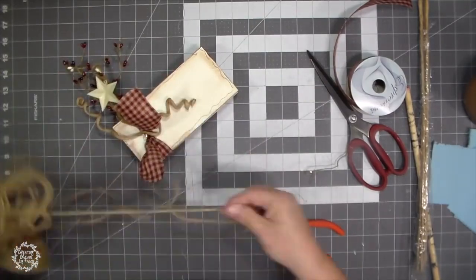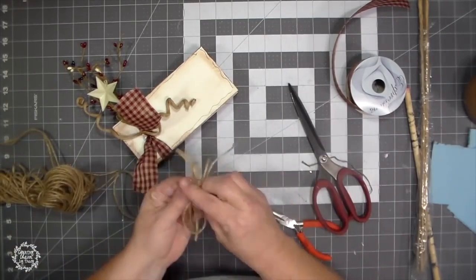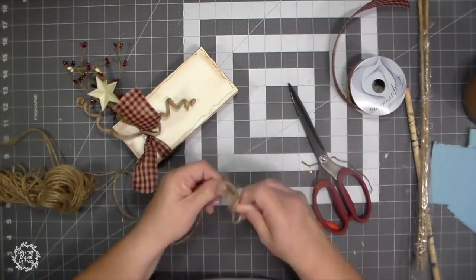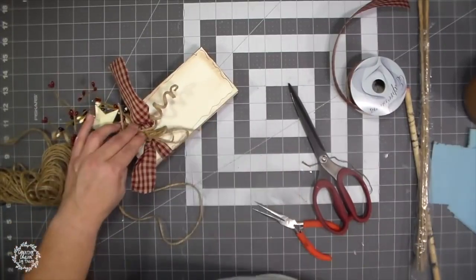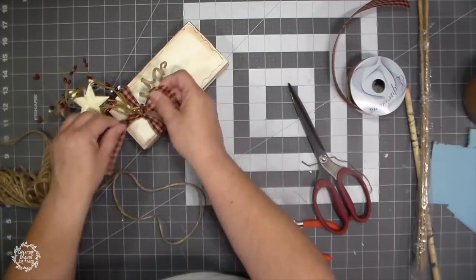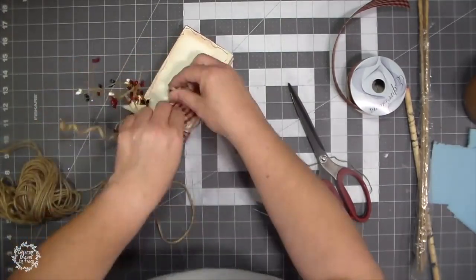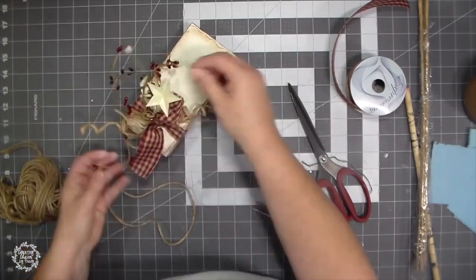Then I have some pip berries that I got from a garland from Hobby Lobby. Then I am taking some jute and I am just making a bow and just hot gluing all of that together and then I just attach it to the top so that it will look really cute just like that.